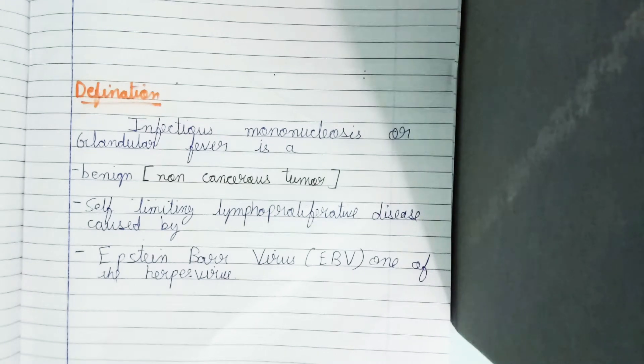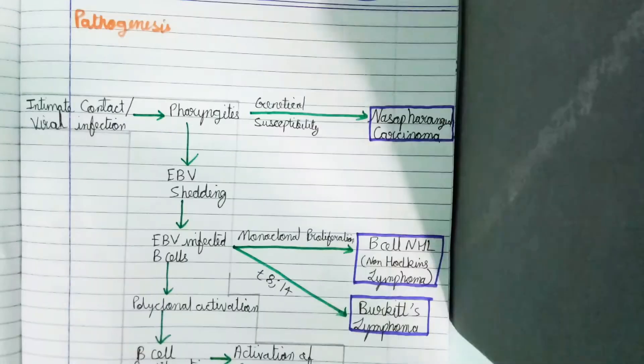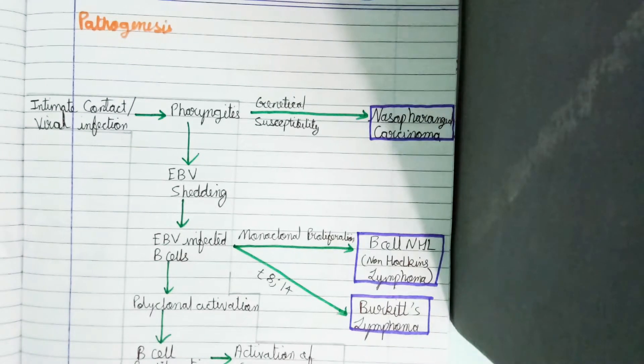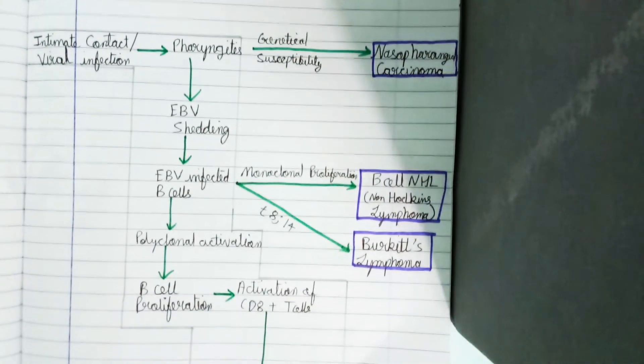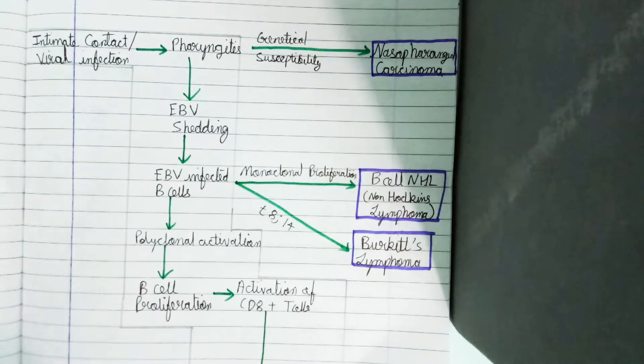Here it's easily explained. When a person is transmitted by intimate contact or viral infection, the cells reach into the pharynx and cause pharyngitis.